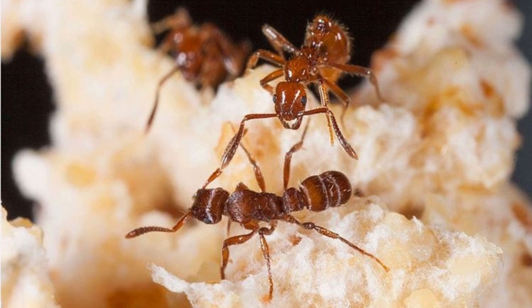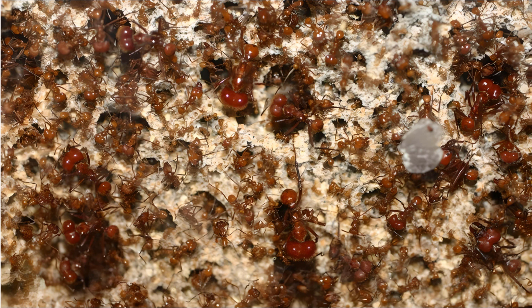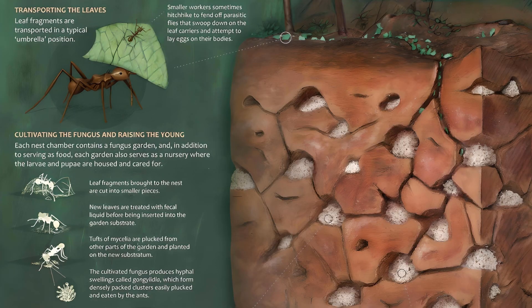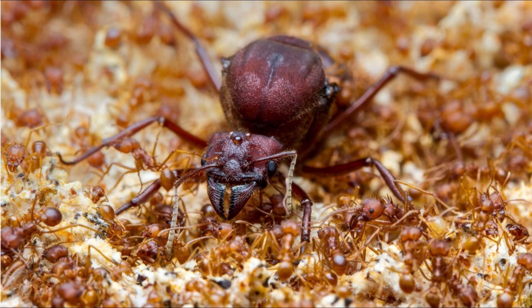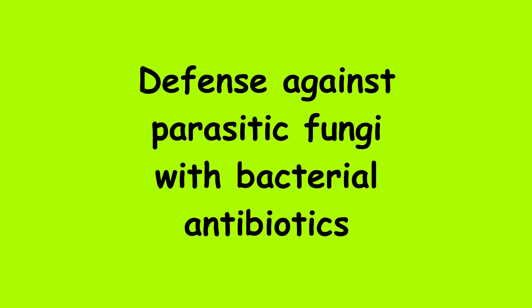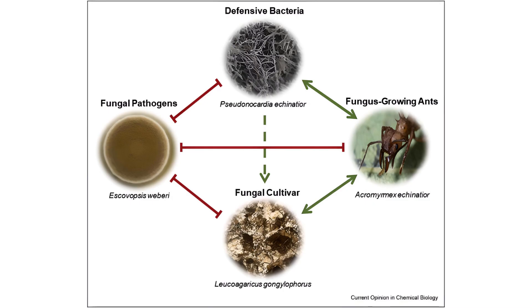Ants have been farming fungi for over 50 million years. At first the relationship was relatively loose and the fungi could still reproduce on their own. However, after millions of years of symbiosis, the interdependence became stronger and stronger. The fungi used by leafcutter ants stopped producing spores and became dependent on the ants for proliferation.